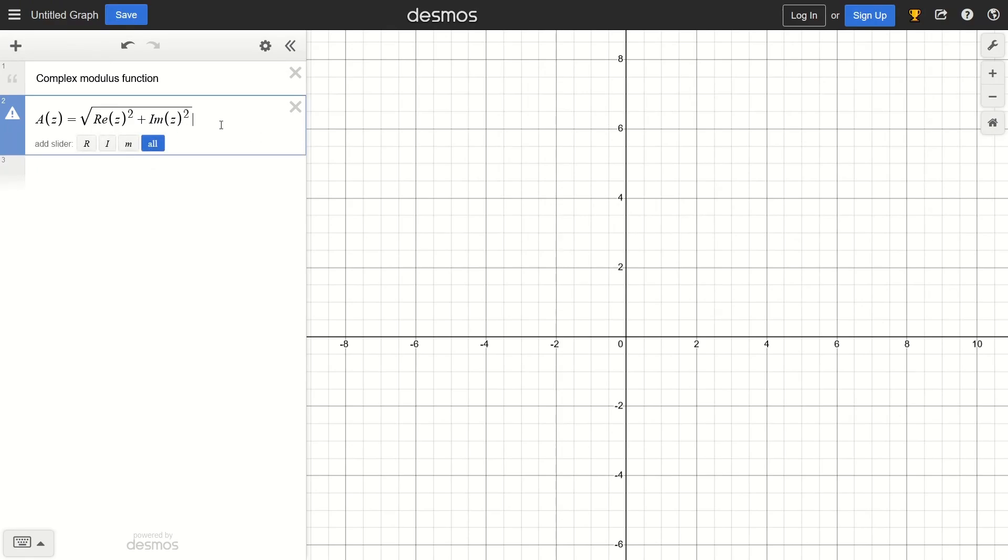But in Desmos we can only work with coordinates, so that's why we're going to imagine the x-axis is the real number line and the y-axis is the imaginary number line.